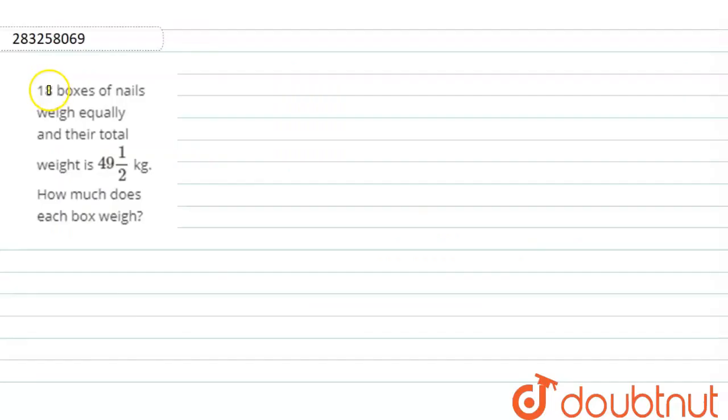Hello everyone, this is our question. 18 boxes of nails weigh equally and their total weight is 49 and 1/2 kg. How much does each box weigh?